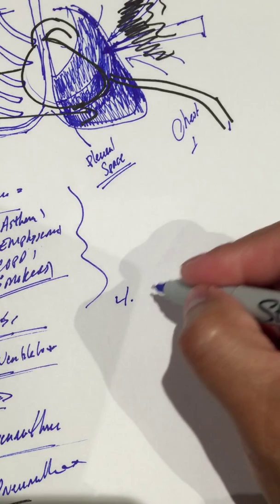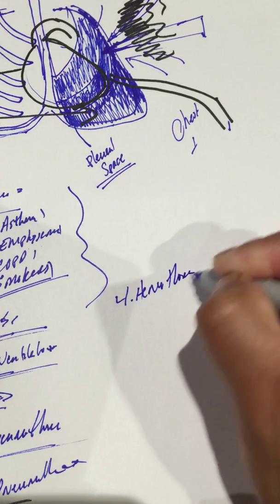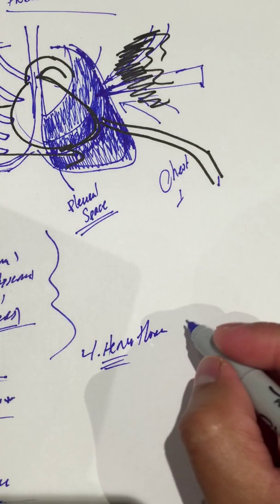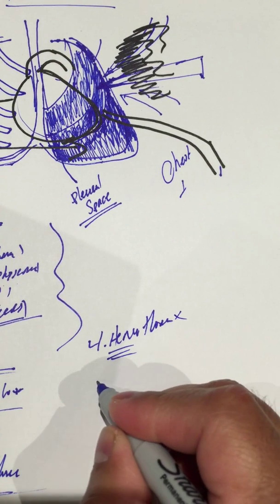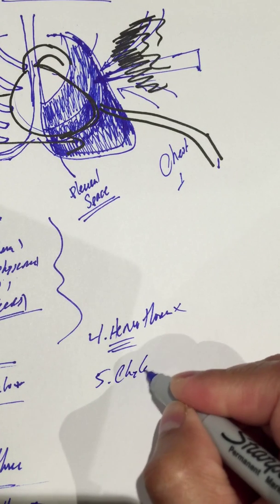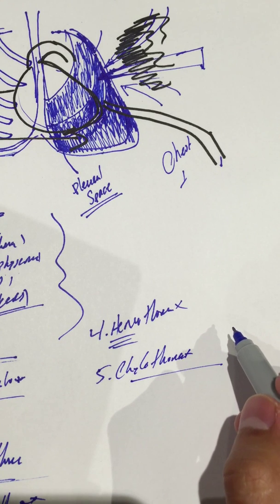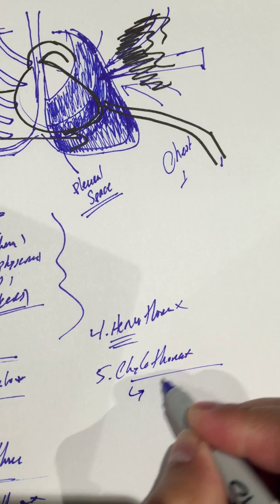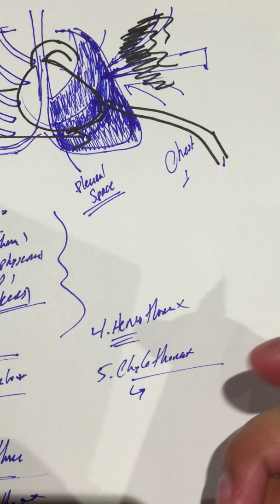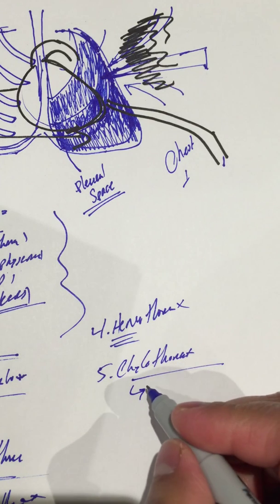You may also have something like a hemothorax — 'hemo' meaning blood — so in this case you'd have blood in the pleural space. There is also chylothorax, which would be lymphatic fluid in the pleural space. This fluid would be milky white in color.